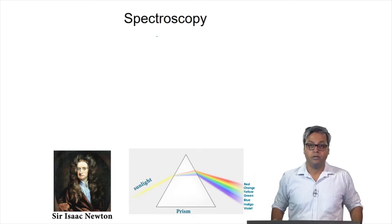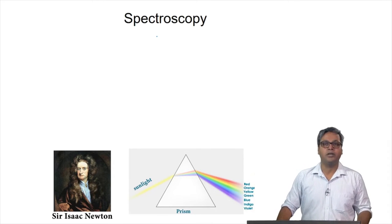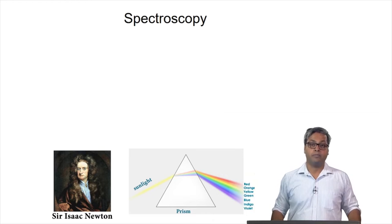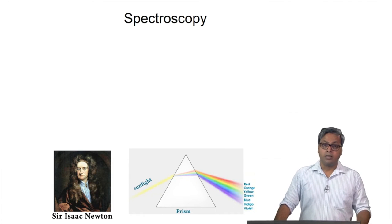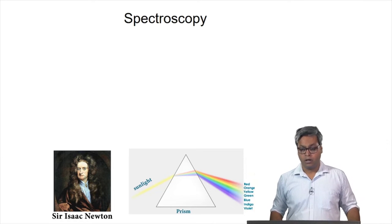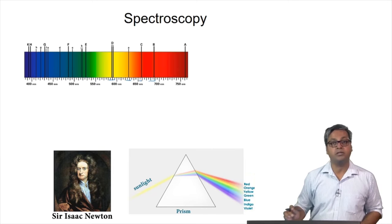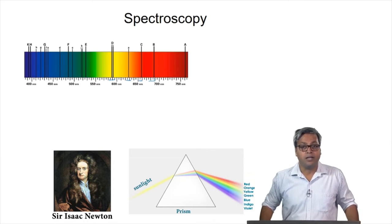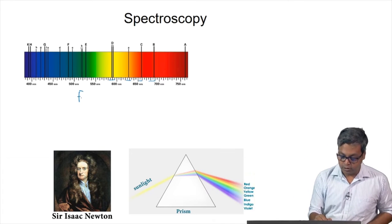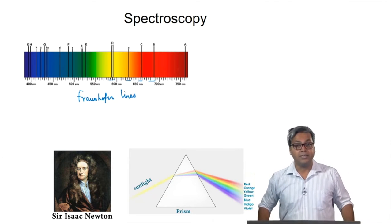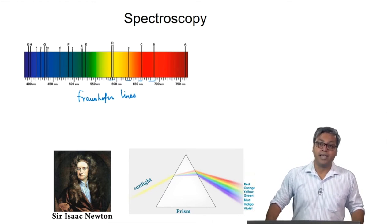Before we go into the details of spectroscopy, first let us look a little bit into the history of spectroscopy. Spectroscopy began in the 17th century and Newton first applied the word spectrum to describe the solar spectrum — the rainbow of colors that we just talked about. Later on, careful analysis showed that the solar spectrum consists of many dark lines. These dark lines are also known as Fraunhofer lines and these lines can be used to find the existence of various elements in the solar atmosphere.